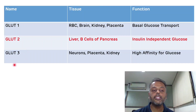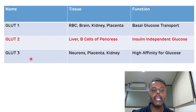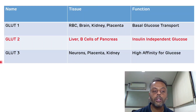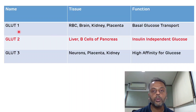GLUT3 is present in neurons, the small intestine, and kidney, and has high affinity for glucose. Note well: the glucose transporter present in the brain is GLUT1, while the glucose transporter present in neurons is GLUT3. The major glucose transporter present in red blood cells is GLUT1.